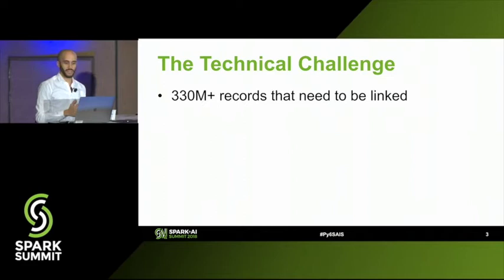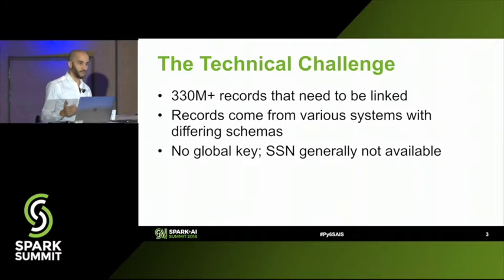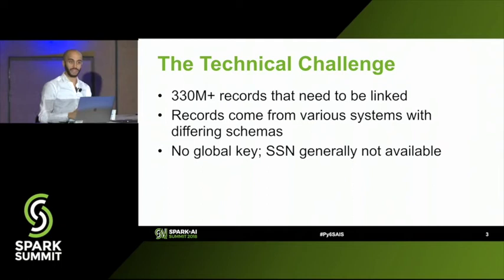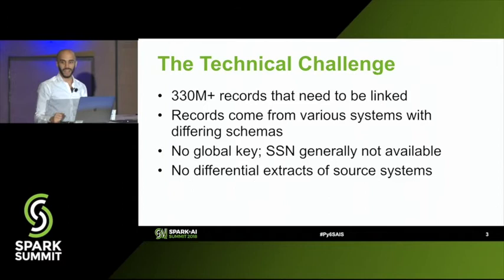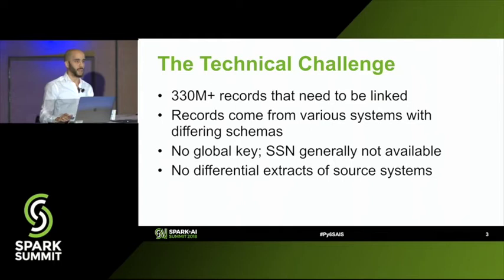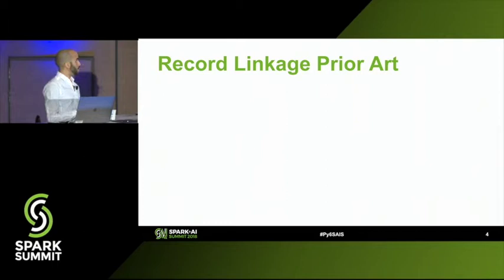What's the technical challenge? We have around 330 million records about customers, leads, and other people internal to MassMutual, scattered across systems with different schemas. There's no global key. A very small percentage of records have the SSN available, which you could theoretically use as a global identifier, but it's a small percentage. Also, our analytics pipeline cannot do differential extracts from these live systems — we have no way of getting just what changed each day. So to do global record linkage, we have to pull everything in and do a full linkage across the whole thing every night.